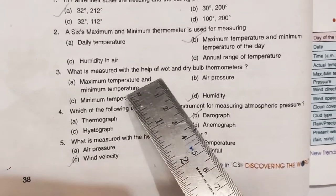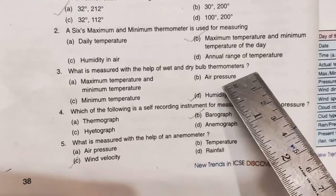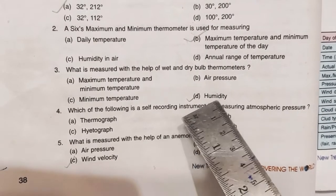Third, what is measured with the help of wet and dry bulb thermometers? It is D: humidity.